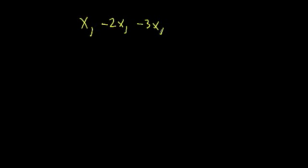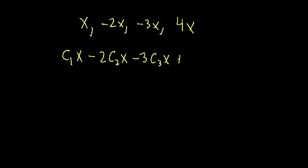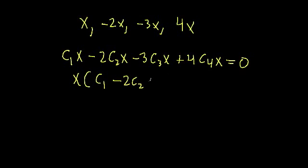Let's do an example. Our set of functions is x, negative 2x, negative 3x, and 4x. We want to see if this set is linearly independent or linearly dependent. We form our linear combination: c1 times x, minus 2c2x, minus 3c3x, plus 4c4x, set equal to 0. We can factor out x and get x times (c1 minus 2c2 minus 3c3 plus 4c4) equals 0.